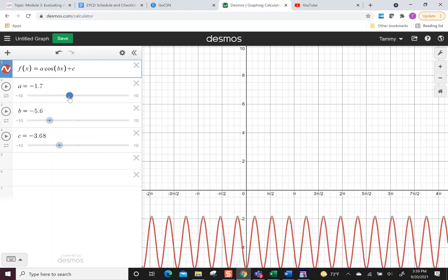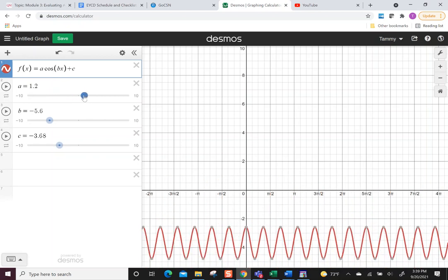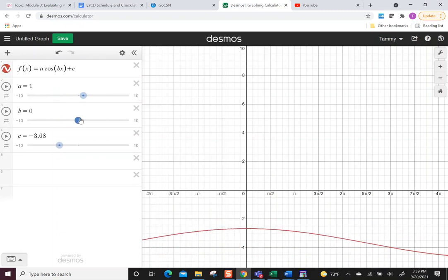Let me take it back to the original position, which for a is the value of one, for b it is also the value of one, and for c, the value would be zero. So this is my starting place.